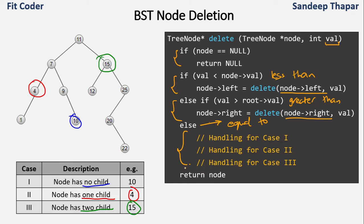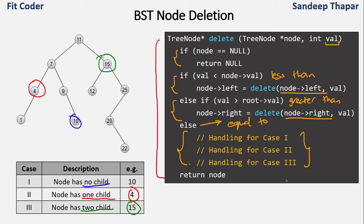Once we reach the node to be deleted, we handle it depending on which category it falls in — whether it has no child, one child, or two children. The handling for those cases will be different. The structure of the deletion is defined, and then we fill in the cases for case one, two, and three individually.